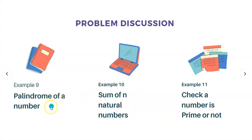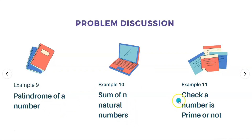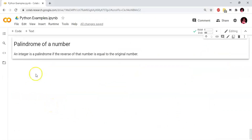First one is the palindrome of a number. Second one is the sum of natural numbers. Third one is check a number is prime or not. I will discuss these three examples. First: palindrome of a number.